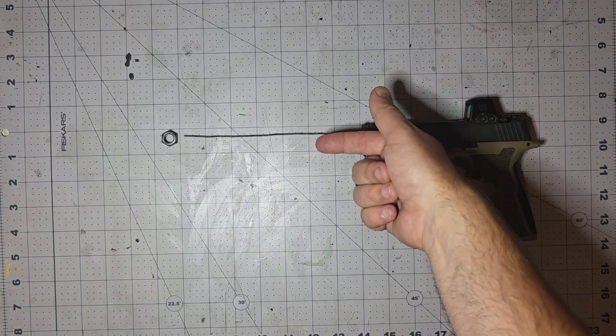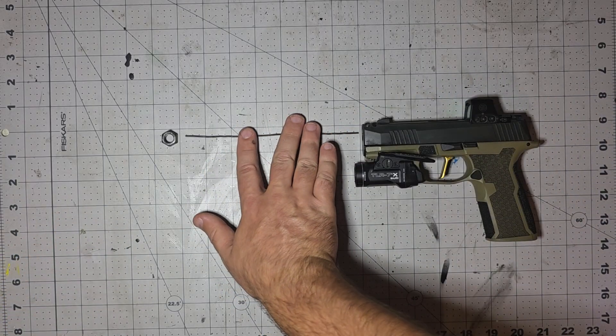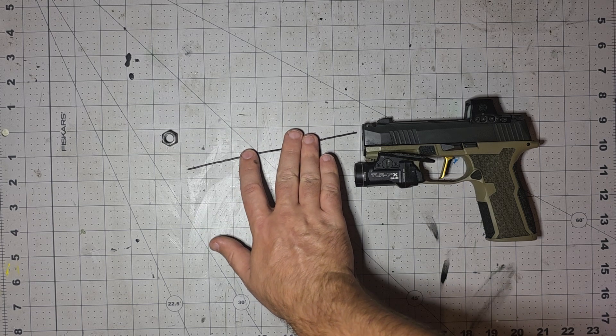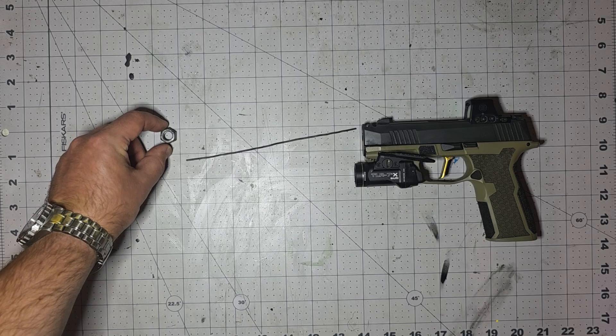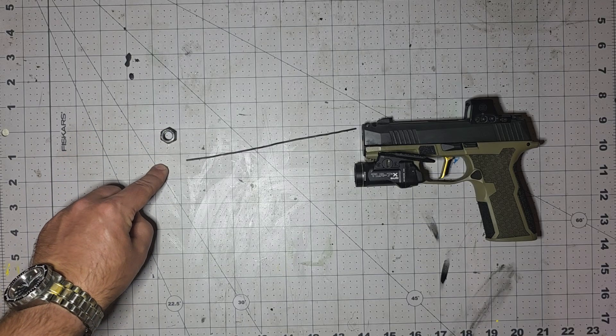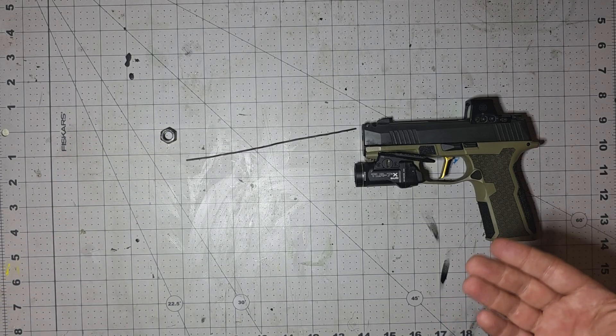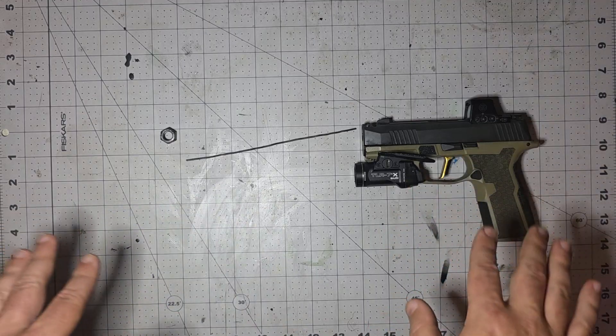As a bullet leaves the end of the barrel, gravity starts affecting it. So the bullet starts dropping. So your target, if it's directly in line with the barrel, your bullet is going to hit low. How do you account for that? How do you fix this situation?